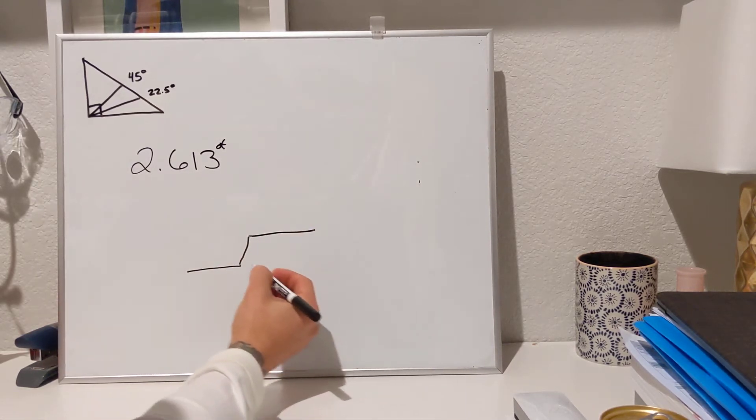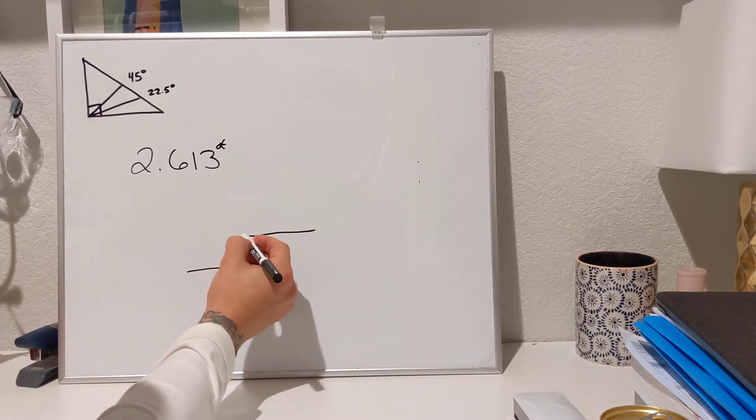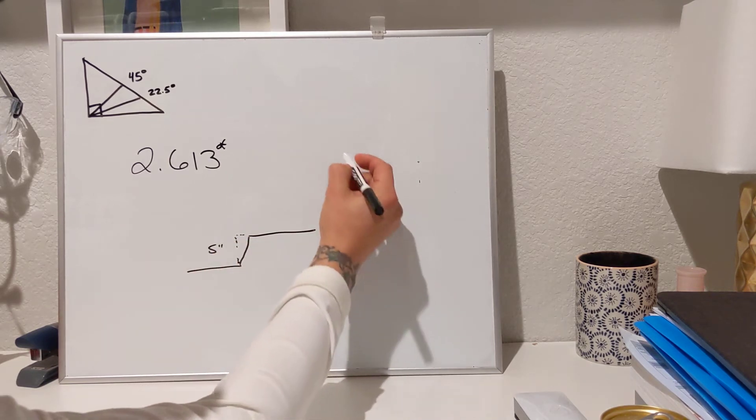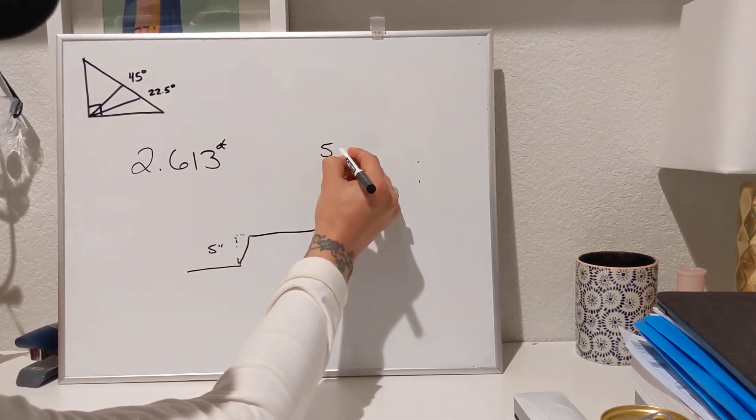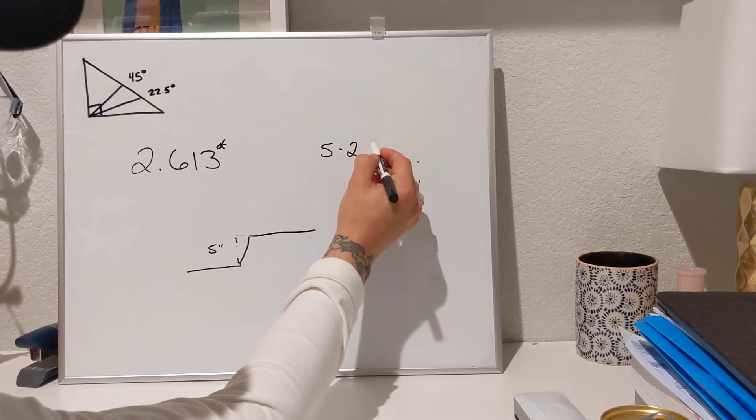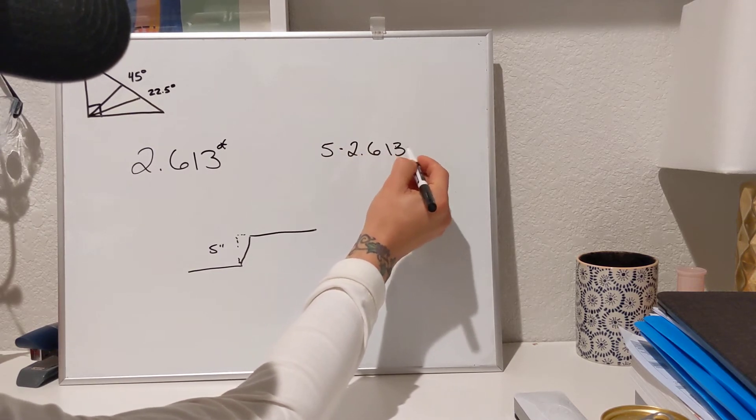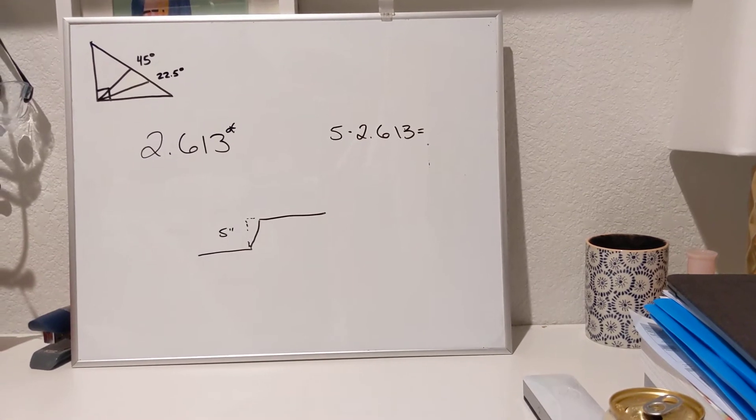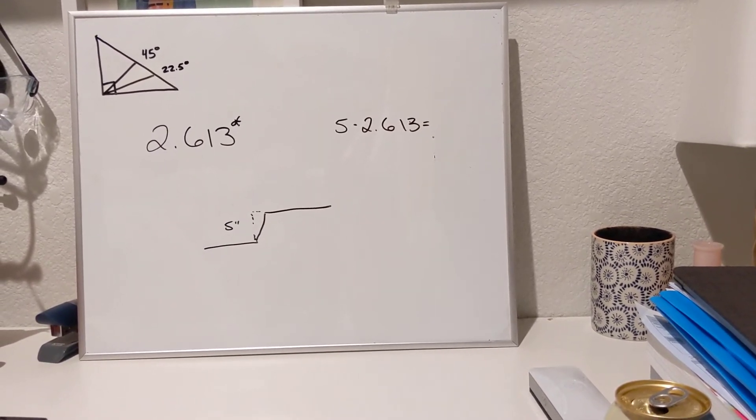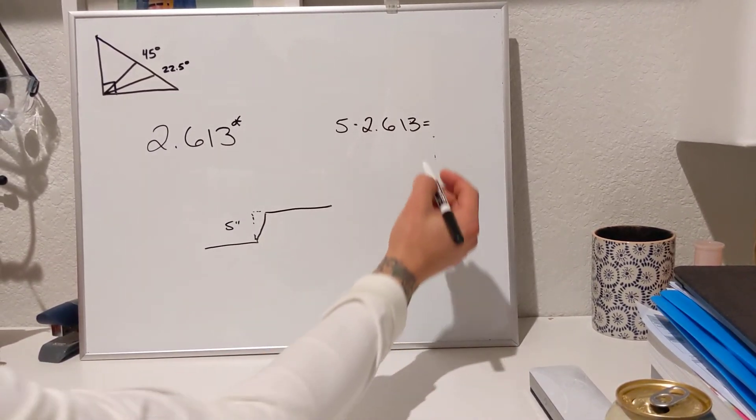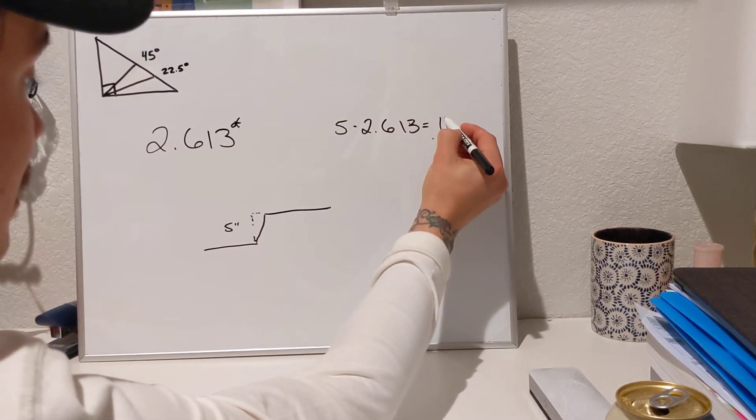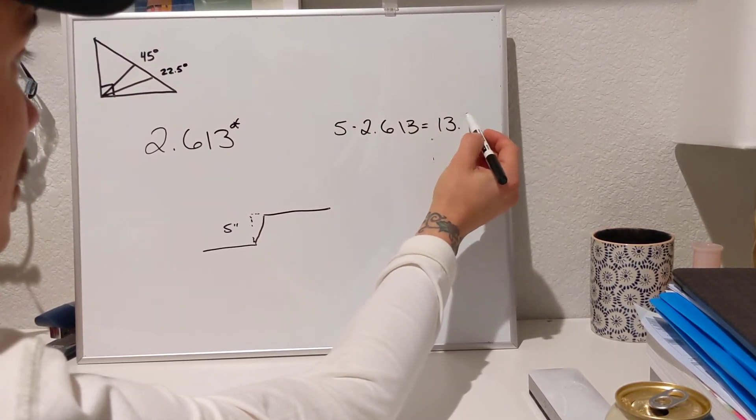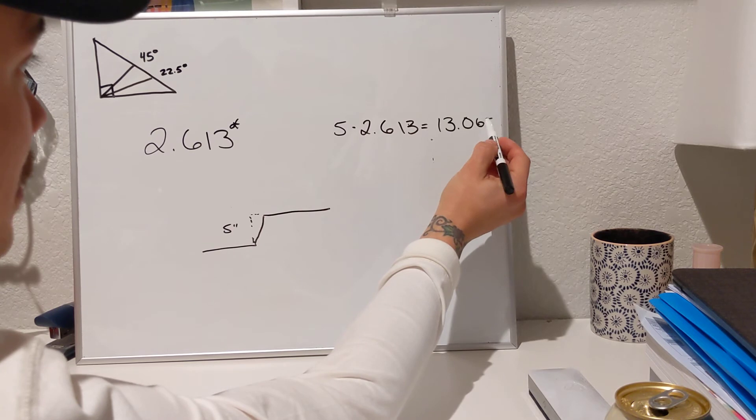So you're going to take, let's say, this distance between these two. It's going to be 5 inches. So you take 5 times 2.613 and that's going to give us our offset cut piece. So it's going to be 13.065.